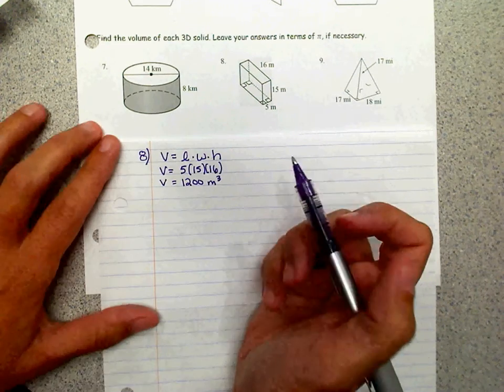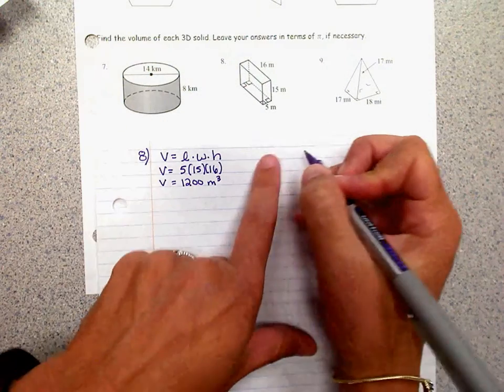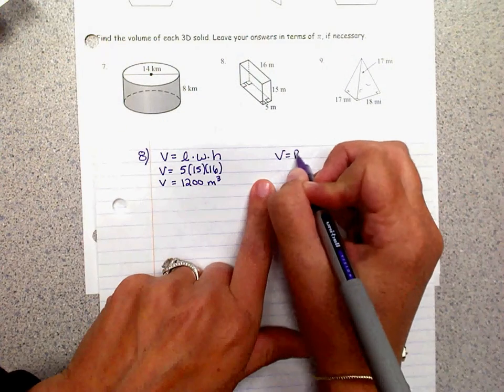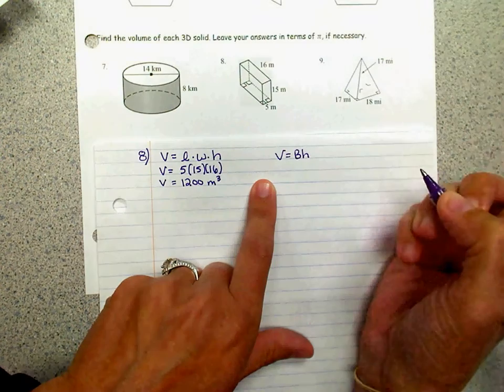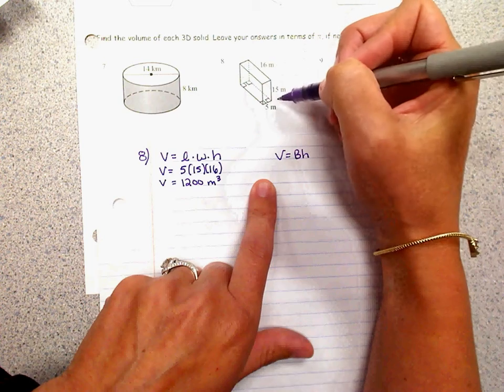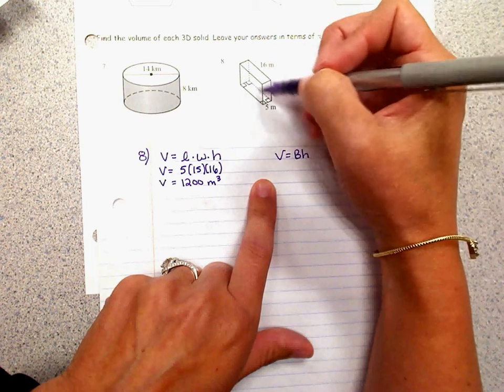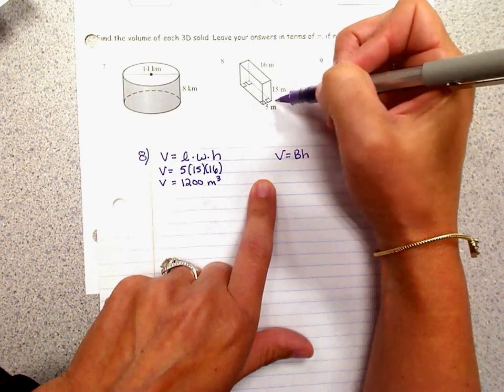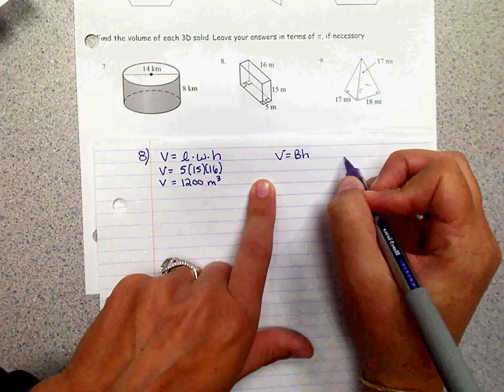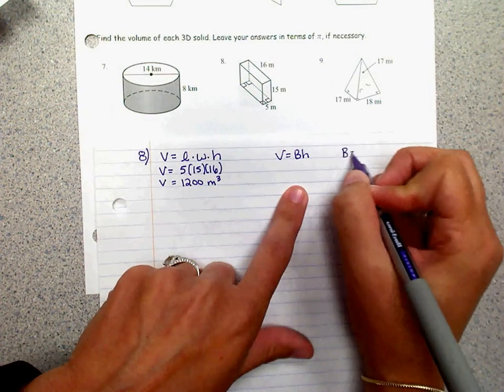If we use the generic formula, volume is area of the base times the height. The base here is the 5 and the 16, and so you can calculate the area of your base.